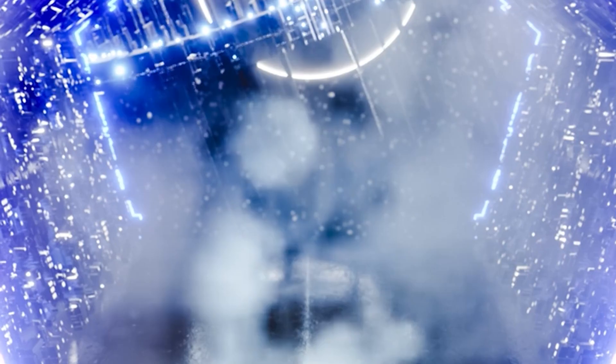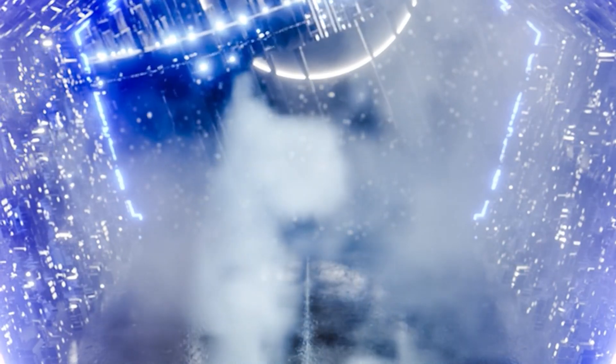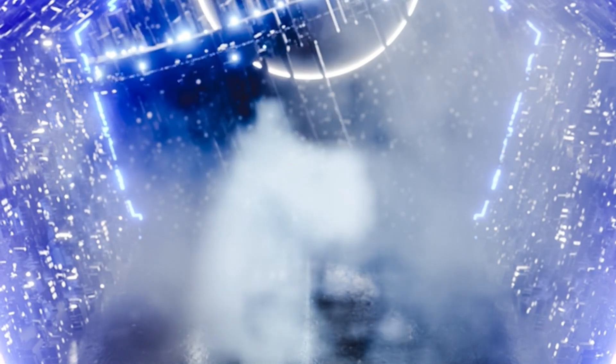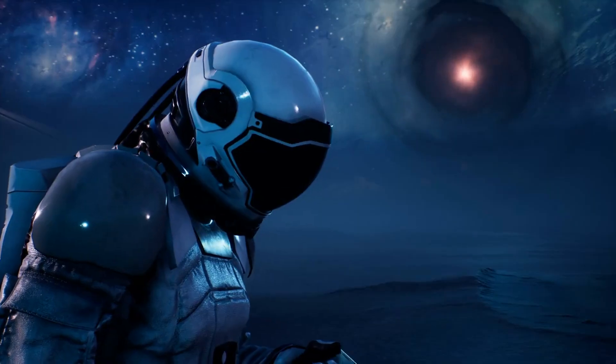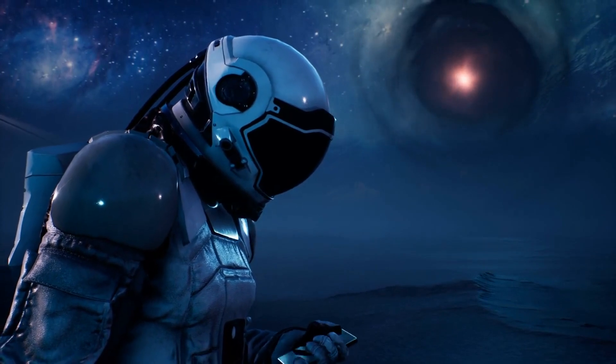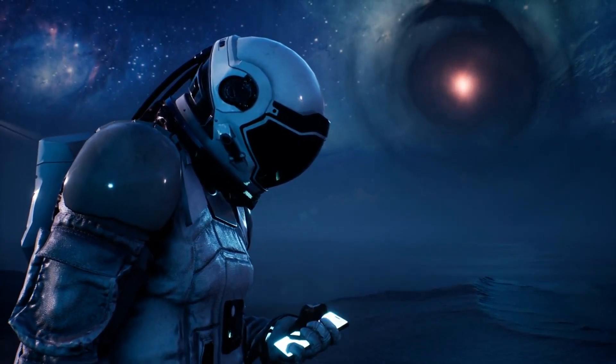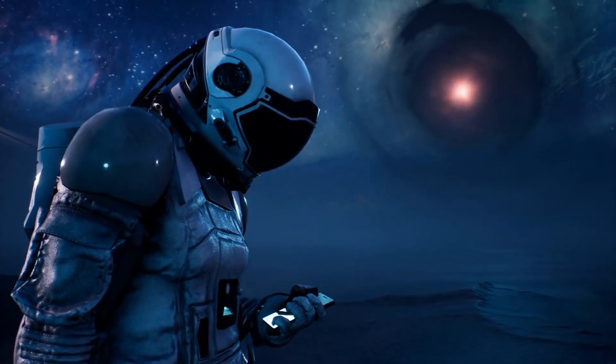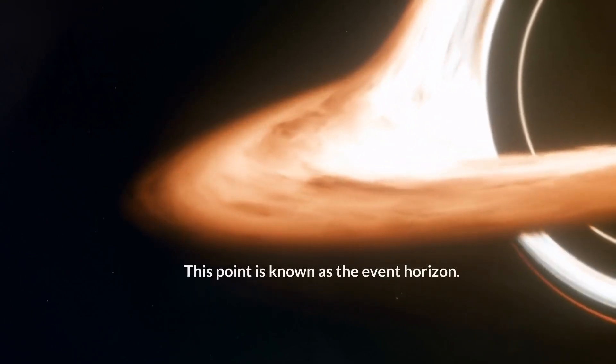The event horizon. Picture this. You're an astronaut floating in space, and you see a black hole in the distance. As you get closer, there's a point beyond which you can't return. A point where the gravitational pull becomes too strong for you to resist. This point is known as the event horizon.